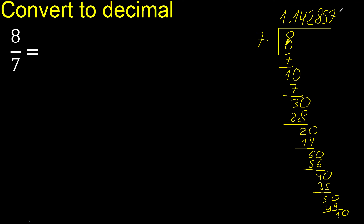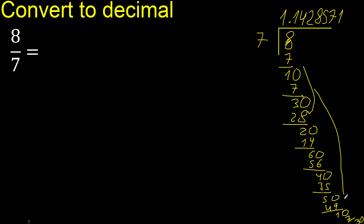7 multiplied by 1 is 7. Subtract: remainder is 1. 3. 10. Minus 7 is 3. Complete — always complete with 0. We are back here — it repeats. Therefore, here it repeats.